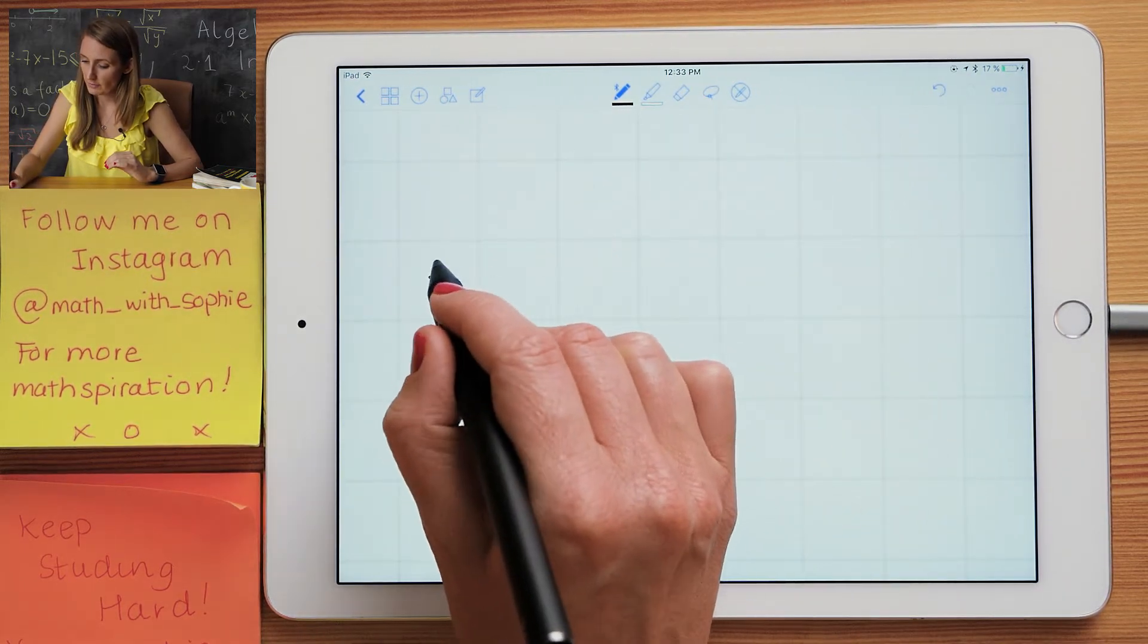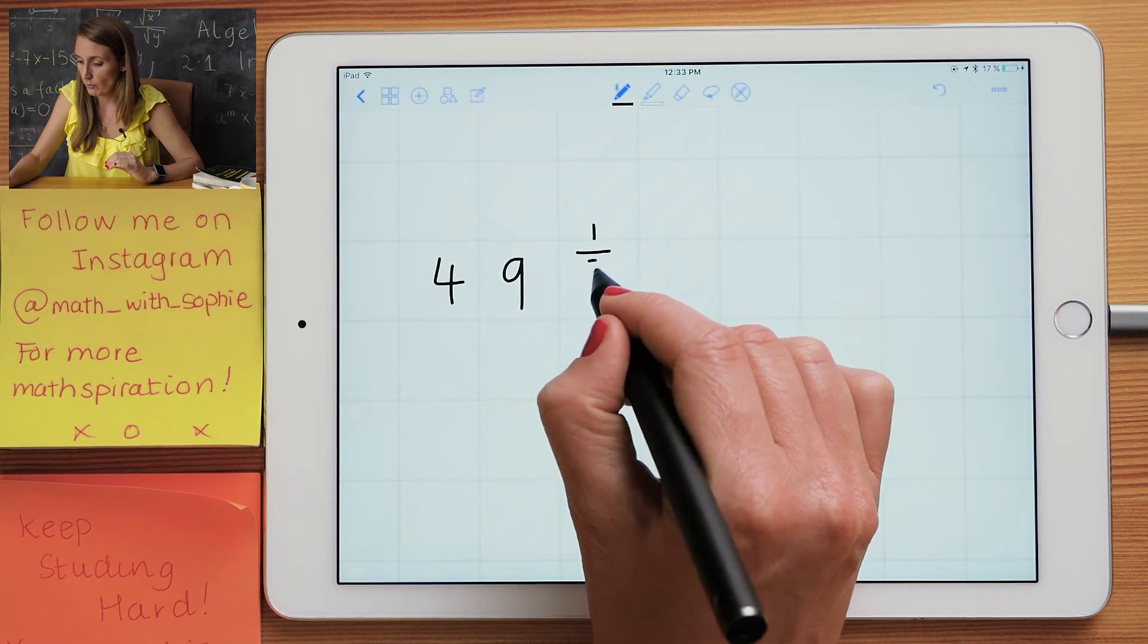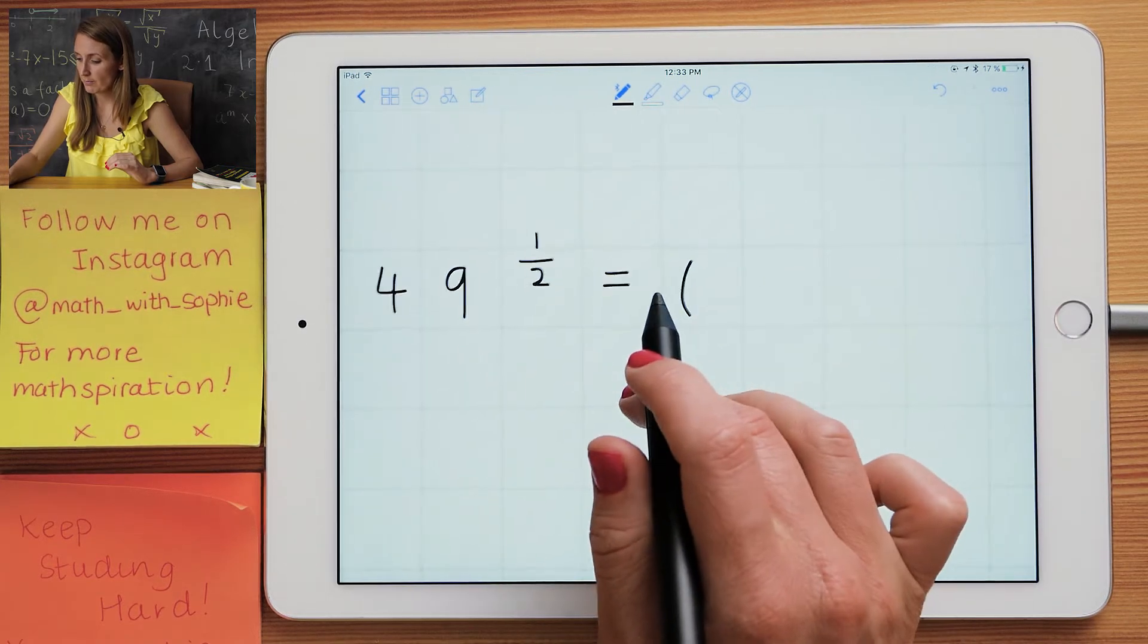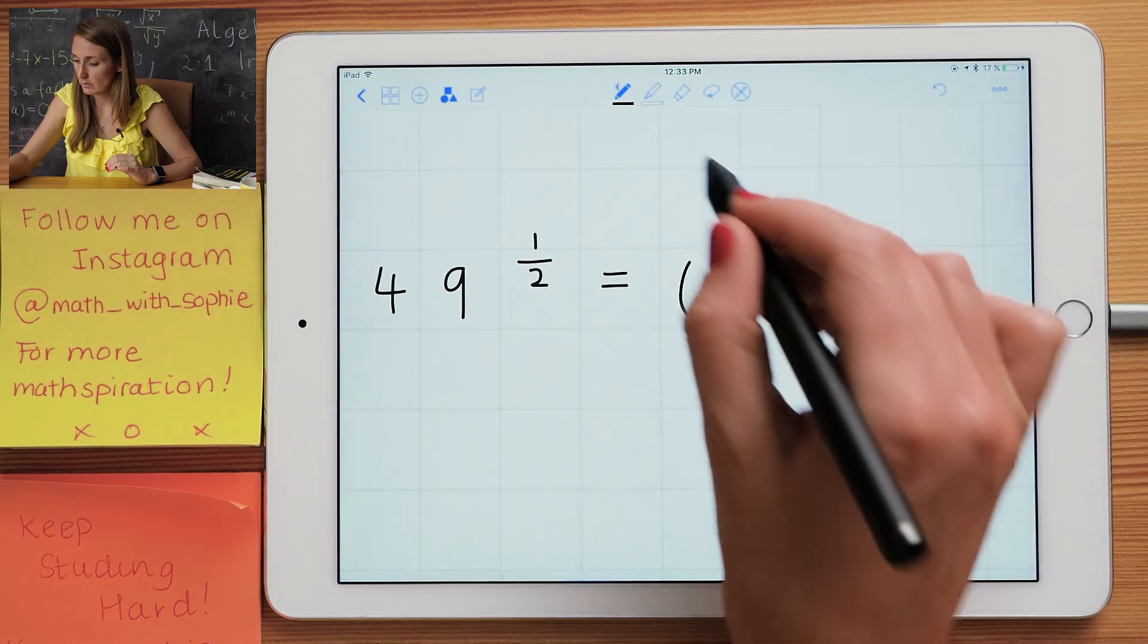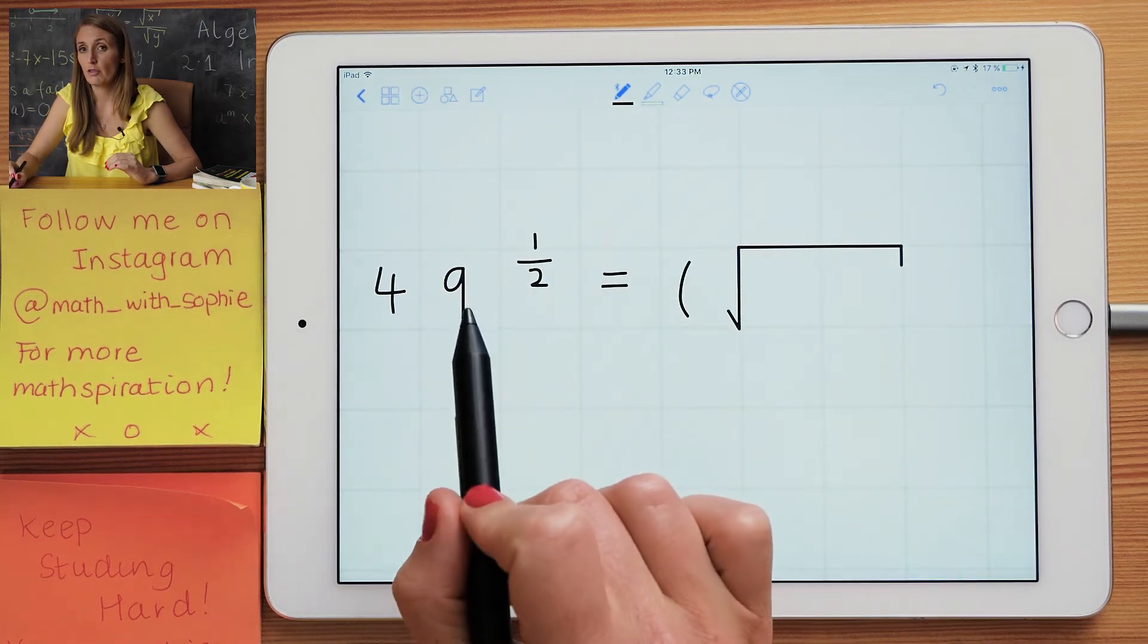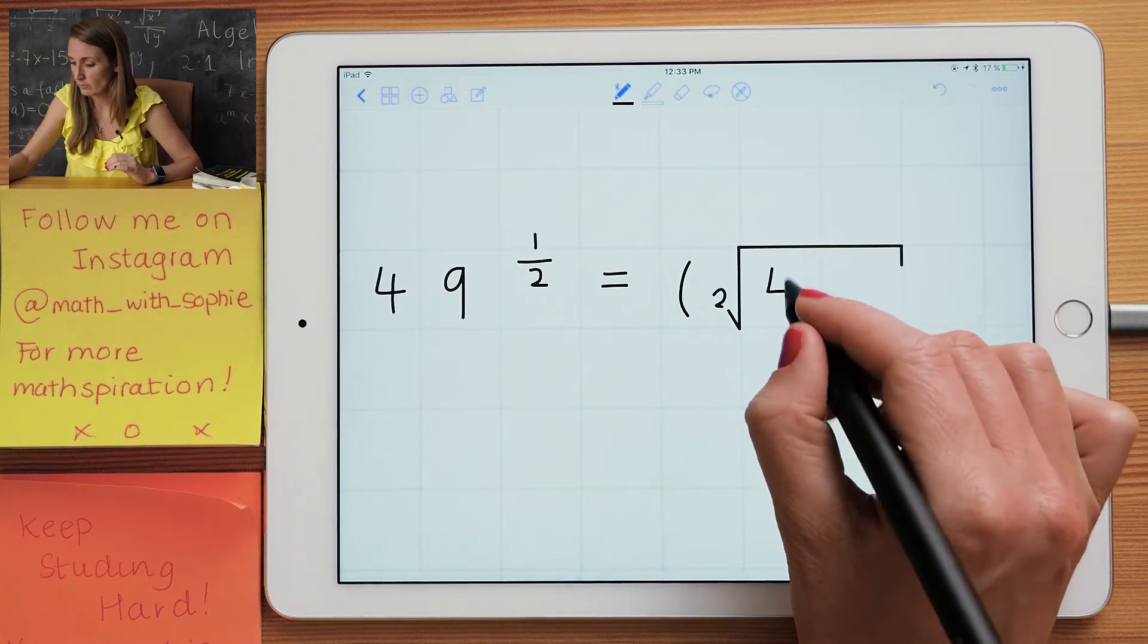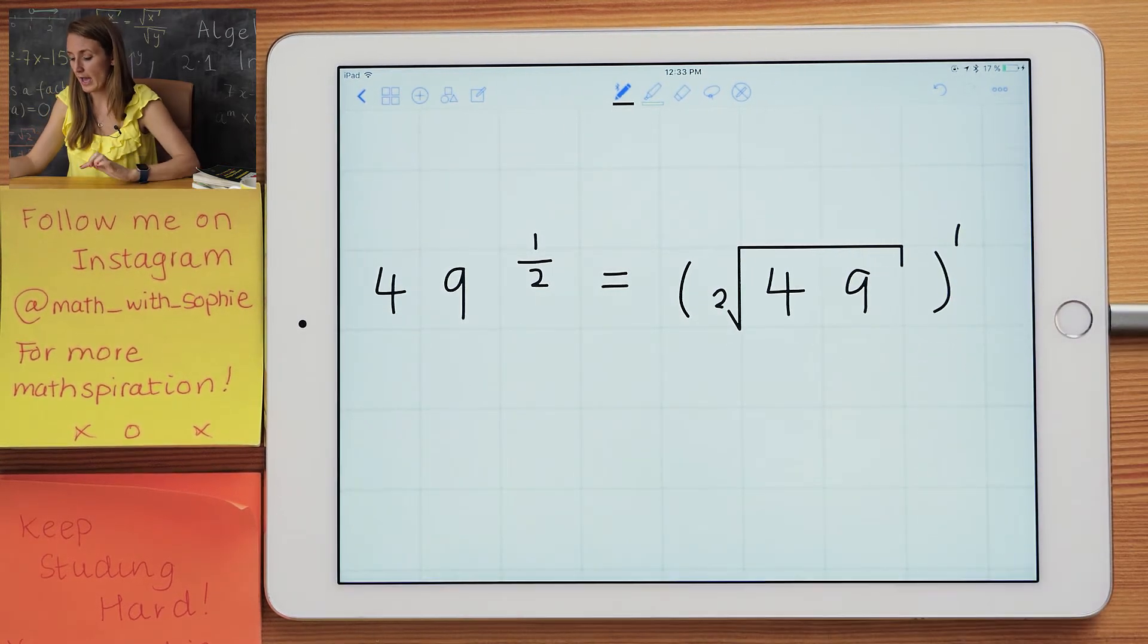Let's take 49 and we're going to have power 1 over 2, or power 1 half. So again I'm going to have a bracket. I'm going to do my root first. So remember, the root is the bottom number, so it's the second root or the square root of 49, and I'm going to put my power on the outside.